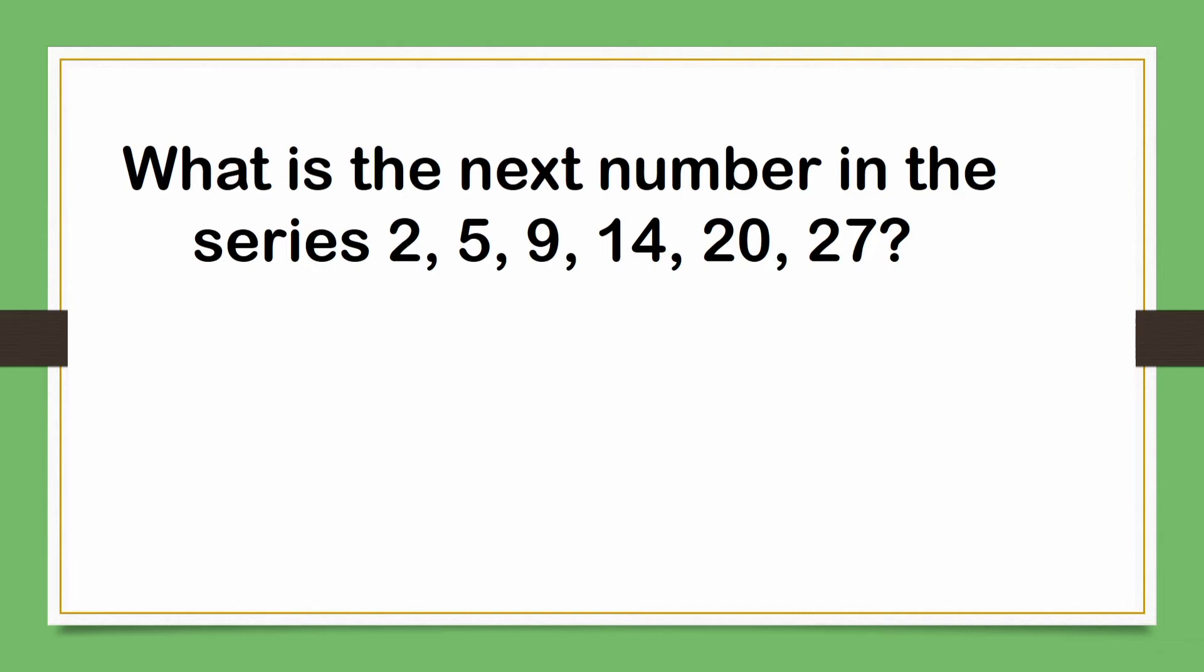Next question, what is the next number in the series 2, 5, 9, 14, 20, 27? Letter A, thirty-three. Letter B, thirty-four. Letter C, thirty-five. Or Letter D, thirty-six? The correct answer is Letter C, thirty-five.